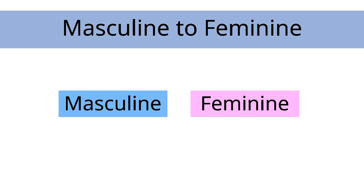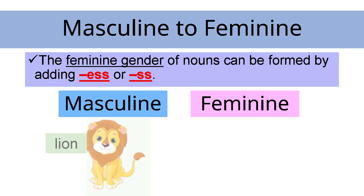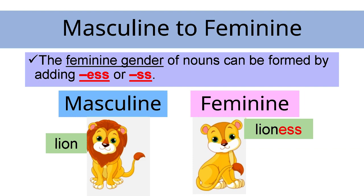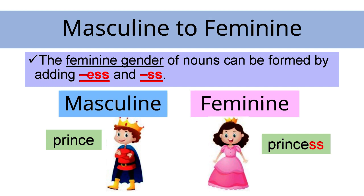In forming the feminine gender of nouns, the feminine gender of some nouns can be formed by adding -ess or -ss. For example, lion becomes lioness. ESS and SS have been added to the masculine gender nouns to form the feminine gender. Lion becomes lioness and prince becomes princess.